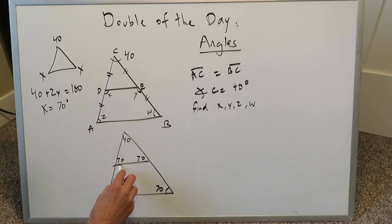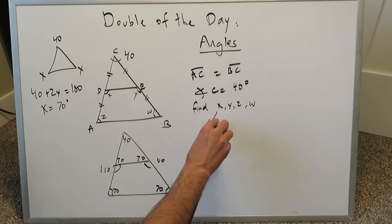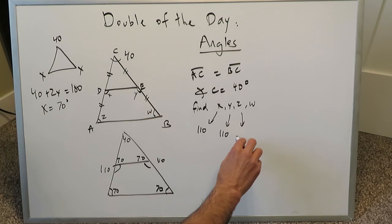These angles are easy to find right here because you have a supplementary angle effect here in a straight line. That must be 110, and this right here must be 110 because these two angles must add up to 180. So now we know X and Y are 110 each. So X is 110 degrees, Y is 110 degrees, Z is 70 degrees, and W is 70 degrees.